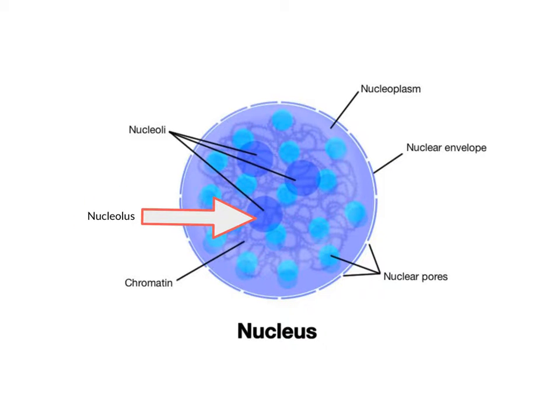There are often several nucleoli, granular structures made of protein and RNA in the nucleus. Their main function is to produce the small and large subunits of the ribosomes, which are the sites of protein synthesis.